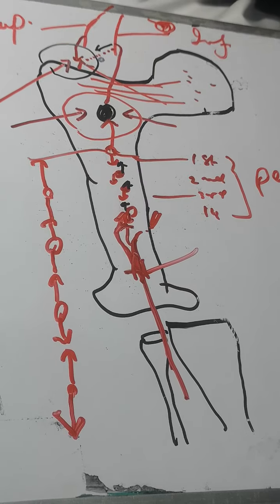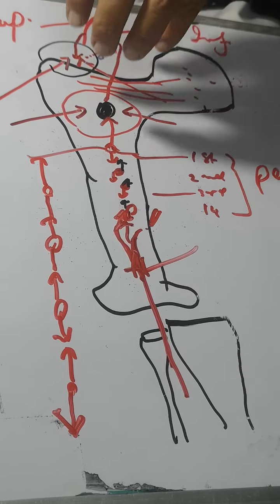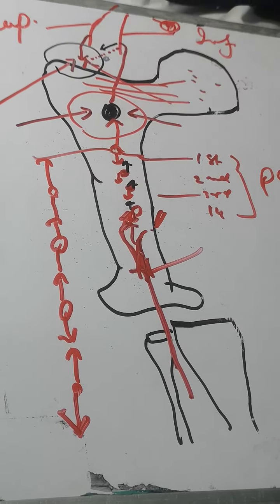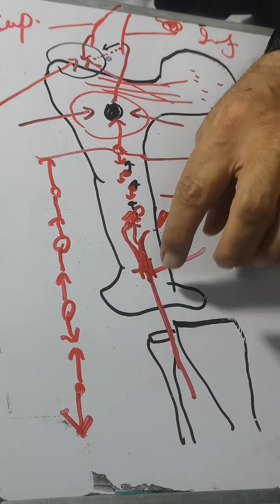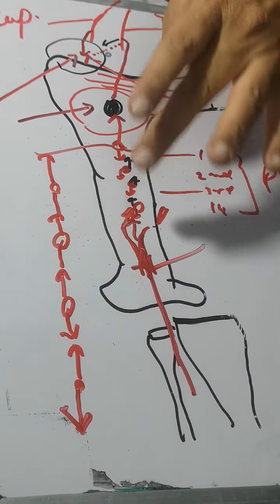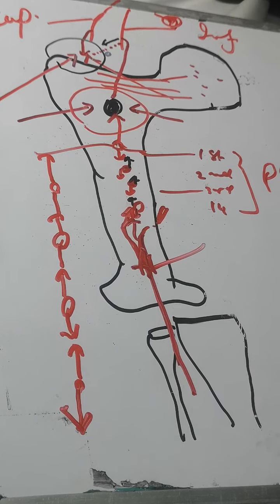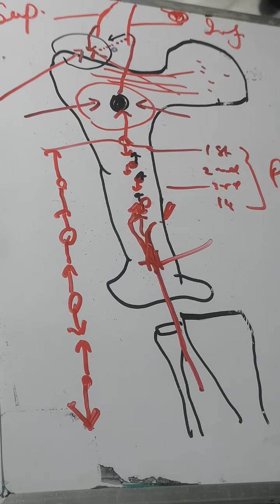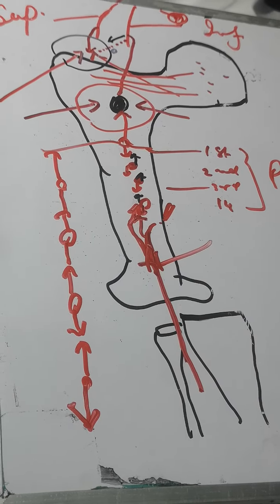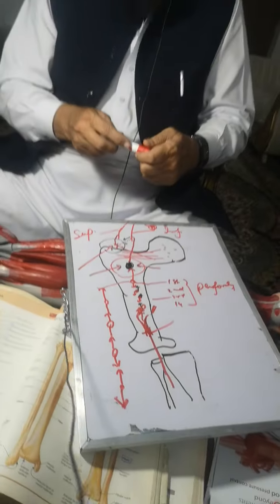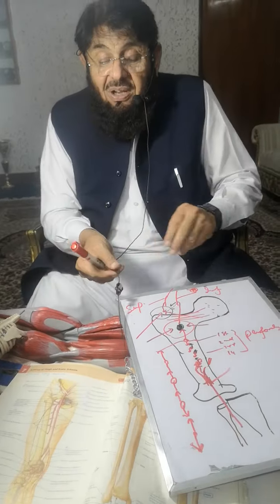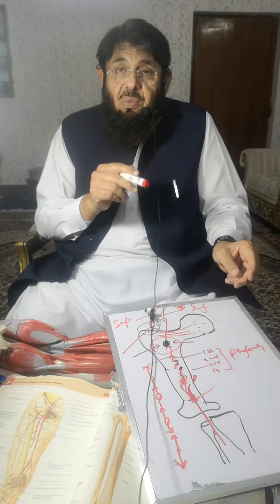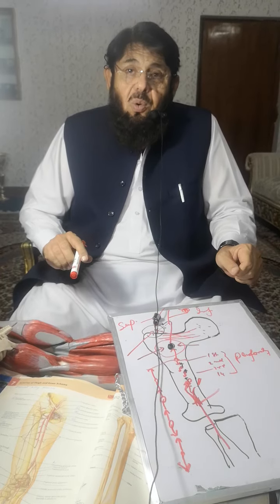Between the superior and inferior gluteal artery branches of the internal iliac, and then the branches of the profunda femoris at the greater and lesser trochanter, and then at the back of the thigh, ultimately connecting with the popliteal artery — this is the anastomosis at the back of the thigh. It forms a collateral channel between the popliteal artery and the internal iliac artery. I think now you will understand the anastomosis at the back of the thigh, present between the internal iliac, the profunda femoris, and the popliteal artery. Thank you very much.